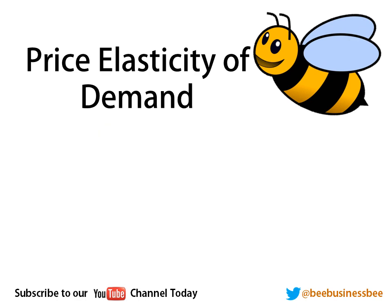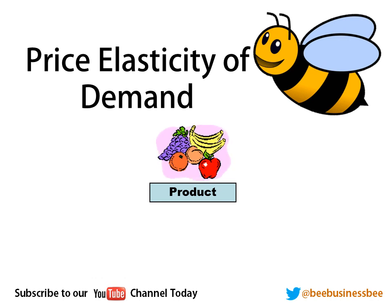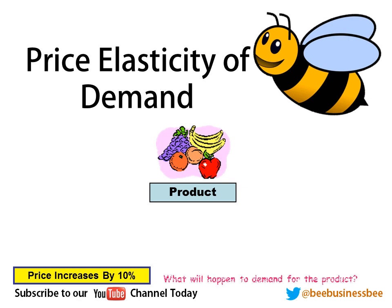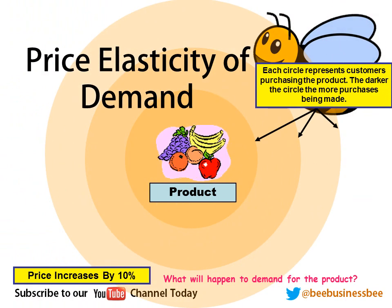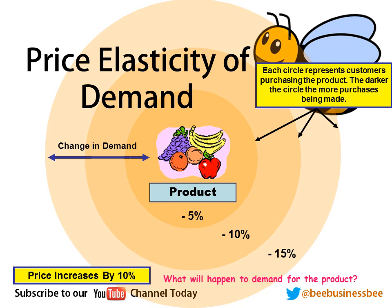Let's take a look at a very simple diagram. We've got our products — fruit and veg. Now if I was to increase the price by 10%, what would you expect to happen to the level of demand? Hopefully you think it's going to fall. So I'm going to add in three different areas of circles. Each of these circles represents a number of customers making a purchase. If we increase the price by 10% and we only lost 5% of our customers, that's not bad for the business — we've increased our price by 10% but only lost 5% of our customers.